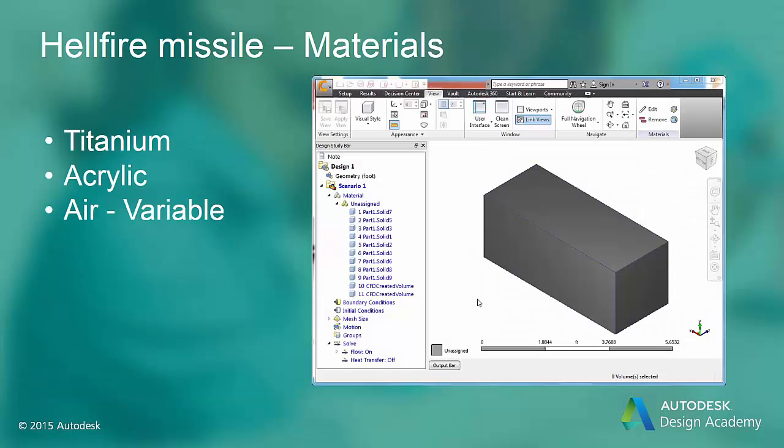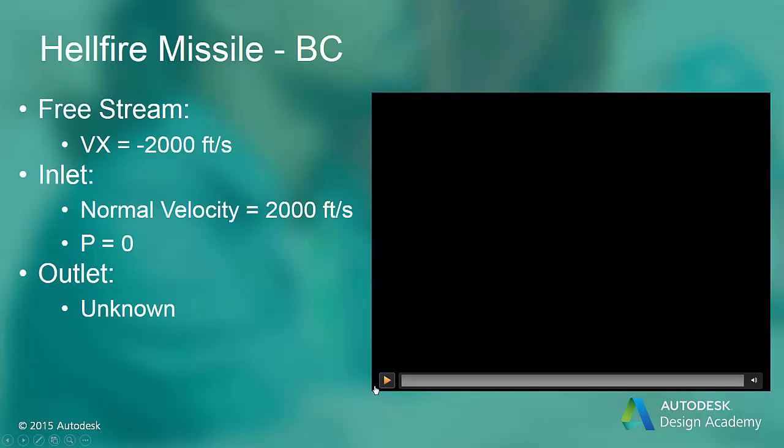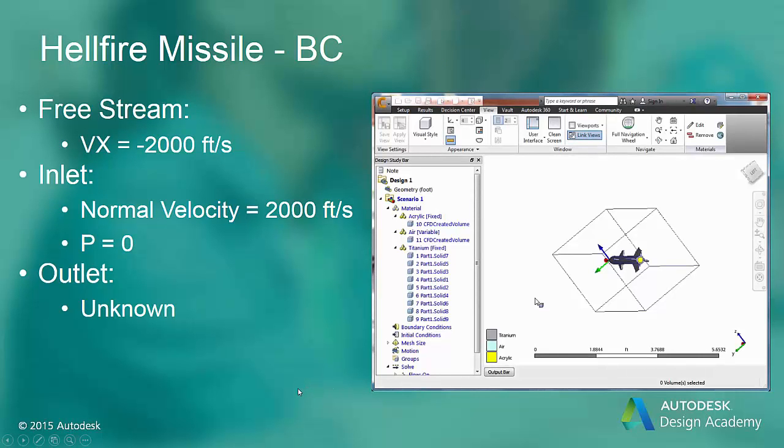For the missile body, we will use titanium, and for the part created during the void fill, use acrylic. For the fluid, we will use air, but we have to make sure that the air is variable. Since this is a compressible flow analysis, the density will vary.